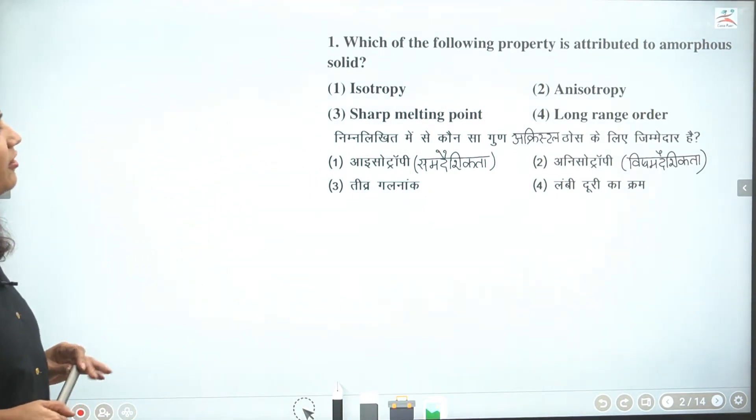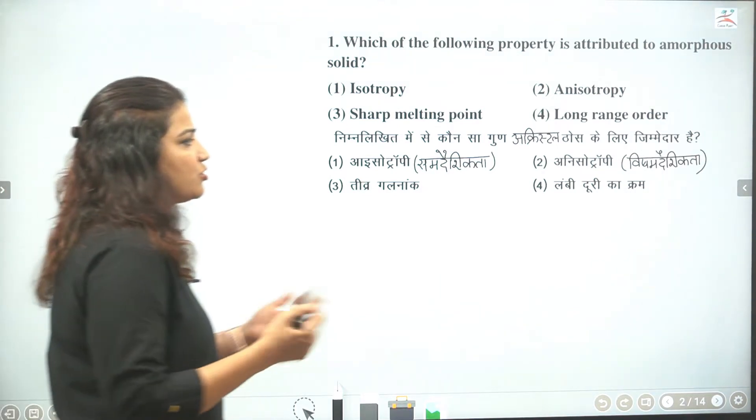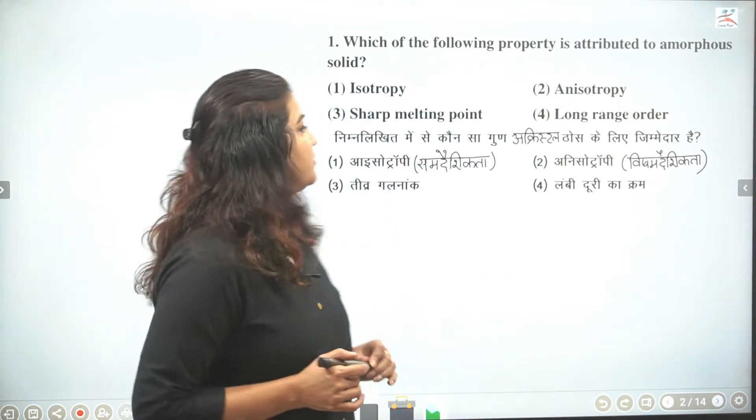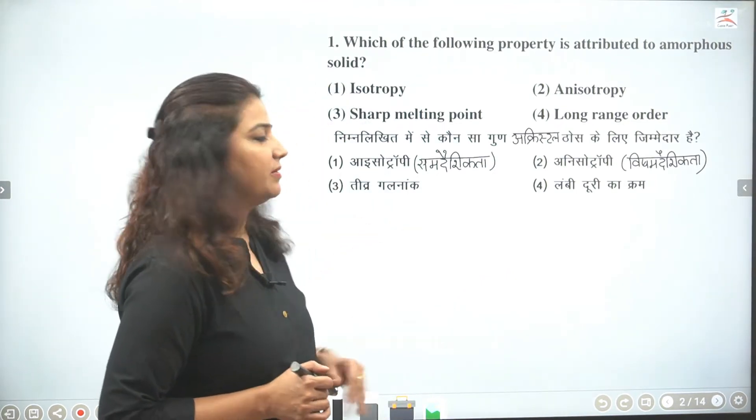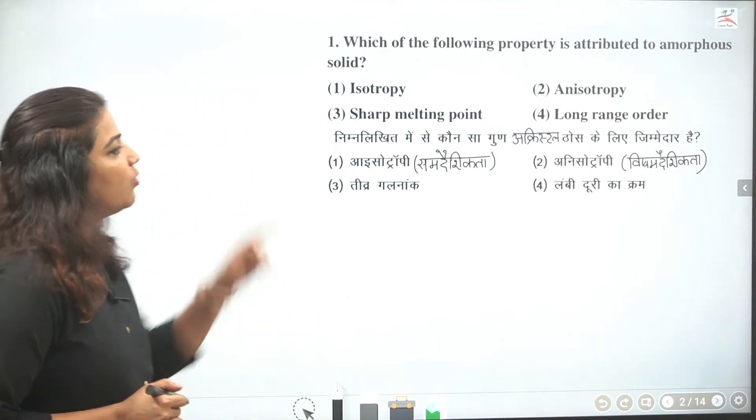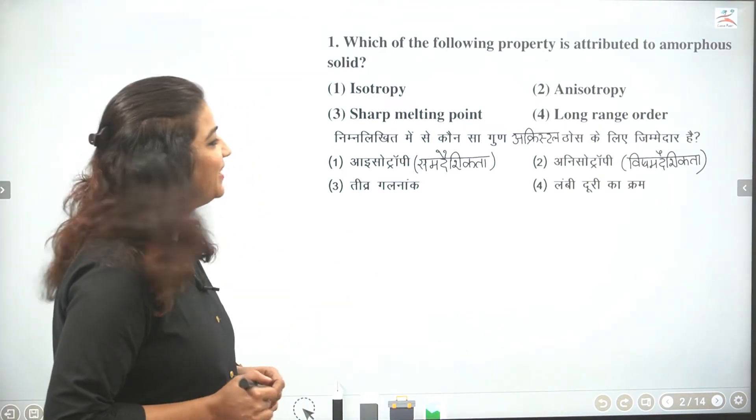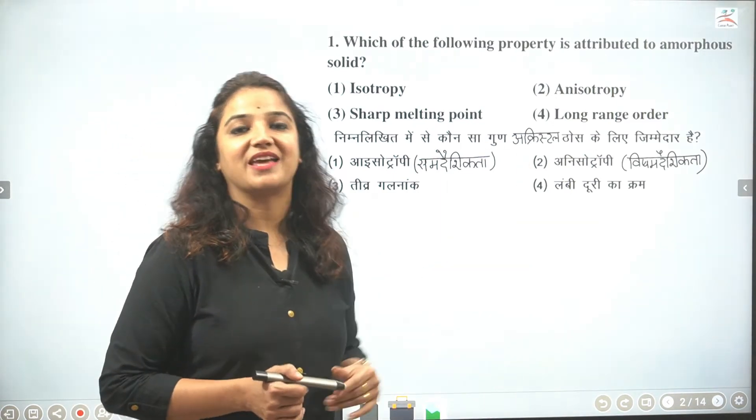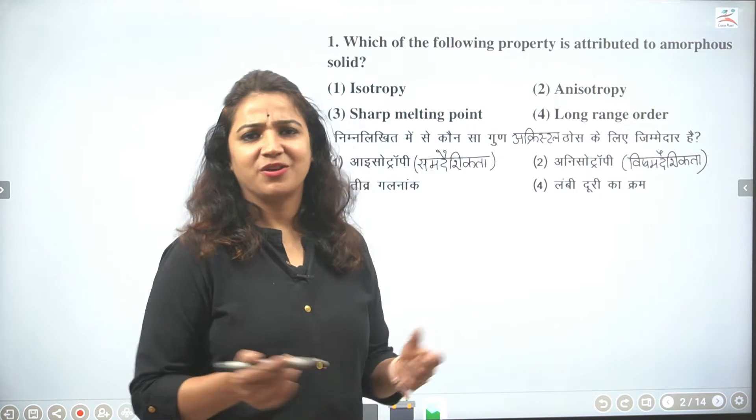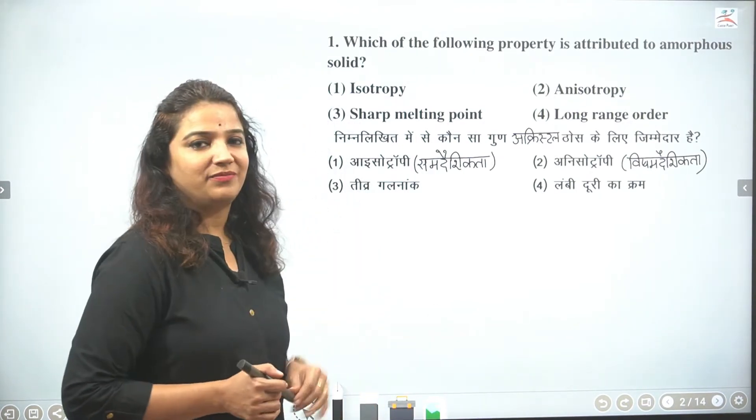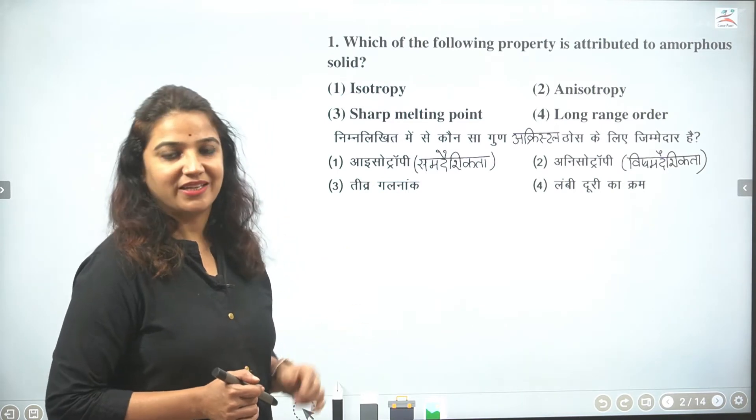Question number one is which of the following property is attributed to amorphous solid. So guys solid is two types: crystalline and amorphous. Okay, now we ask that amorphous solid, which is not crystalline, is related to which property. So if I start with long range order, long range order means where all the particles are arranged. So this is a crystalline property. Then sharp melting point, so melting point is fixed, so we will say it is crystalline.